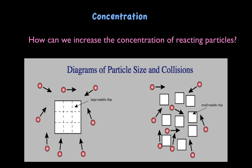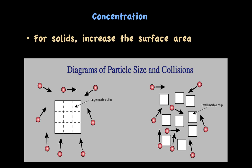How can we increase the concentration of our reacting particles? For solids, we can increase the surface area. If you have a large marble chip, the ability of the reacting particles to collide is much less than when you break up the solid into smaller pieces — there are more sites for collisions to occur. By increasing the surface area, you increase the number of collisions and therefore increase the rate of reaction.